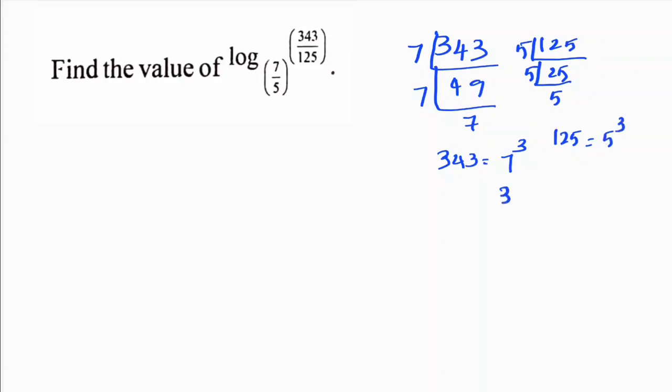So 343 by 125 you can write as 7 by 5 whole cube, because 7 cube by 5 cube. So here log 7 by 5 whole cube to the base 7 by 5.